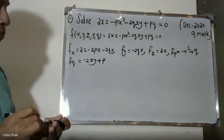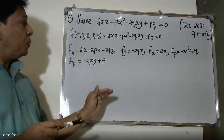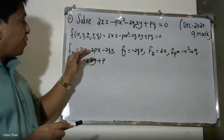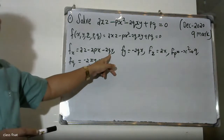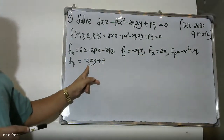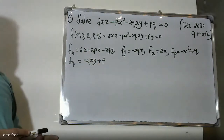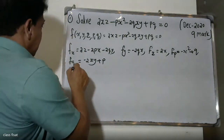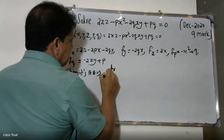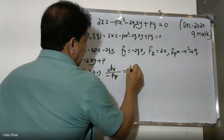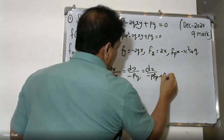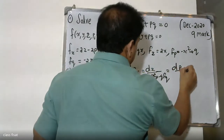Now all the partial differentiation results: x is differentiated, y is differentiated, p is differentiated, q is differentiated. So fx equals 2z minus 2bx minus 2qy. Our fy equals minus 2qx. fp equals 2bx. Our fq equals minus 2xy plus b. These are the required partial derivative values.